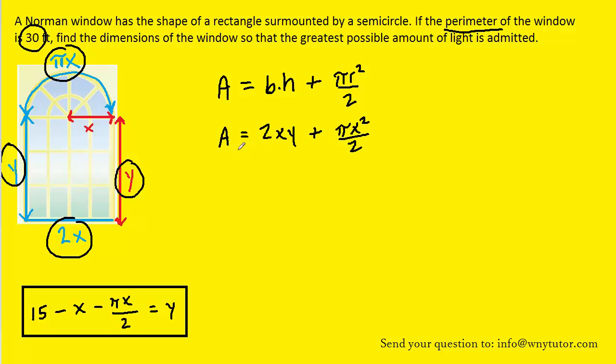So here is the equation that we're going to try to maximize. The problem with the equation is that it has two variables, x and y. And the strategy here will be to make a substitution so that we can get the equation in terms of just one variable. That's where this other equation comes in handy. Remember, we isolated y. So what we can do is plug in 15 minus x minus πx over 2 in for y into this equation. And then that will give us the area in terms of a single variable.